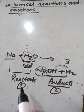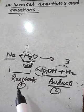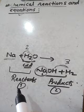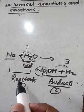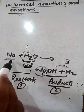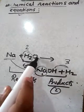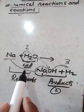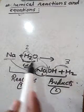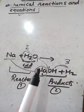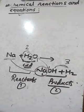An unbalanced chemical equation is one in which the total number of atoms of any specific element on the reactant side and product side are not equal. For a balanced chemical equation, all atoms of all elements must be equal on both sides. Here, sodium and oxygen counts are the same but hydrogen atoms are not equal, so this is an unbalanced chemical equation.